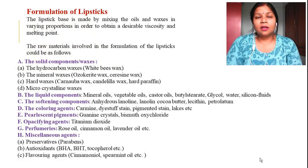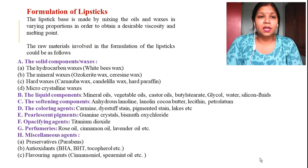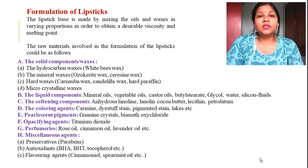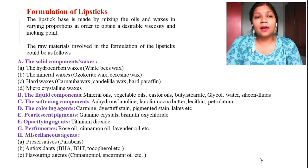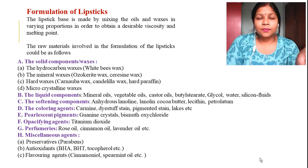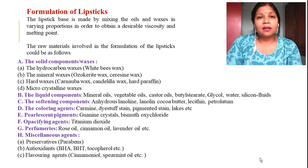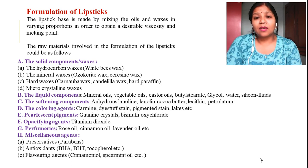The formulation ingredients of lipstick: lipstick is a dispersion of coloring substances in oil and waxes. The first raw material is the solid component or waxes, used to give strength to the lipstick so it can be molded into the desired shape. Waxes used include hydrocarbon waxes, mineral waxes, hard waxes, and microcrystalline waxes. The second component is the liquid component, used as a solvent to disperse the colors, which can be mineral oil, vegetable oil, castor oil, butyl stearate, glycol, water, silicon fluids, etc.